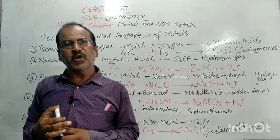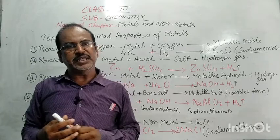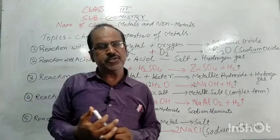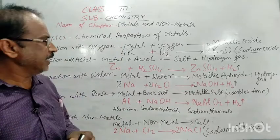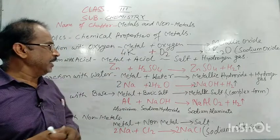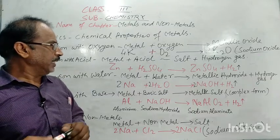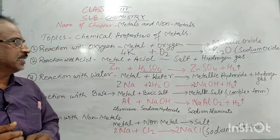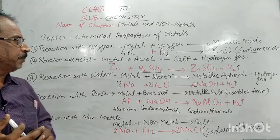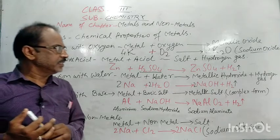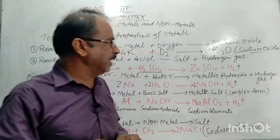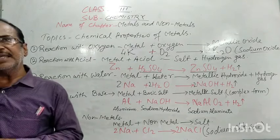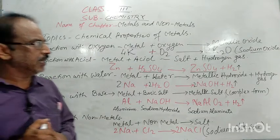In the second case, metal reacts with acid to form a metallic salt and hydrogen gas. For example, Zn + H₂SO₄ → ZnSO₄ + H₂. Here zinc is the metal represented by Zn, and the acid is H₂SO₄, also called the king of acids. So zinc plus sulfuric acid forms zinc sulfate and hydrogen gas. Hydrogen is a lighter gas and it evolves upward in air.